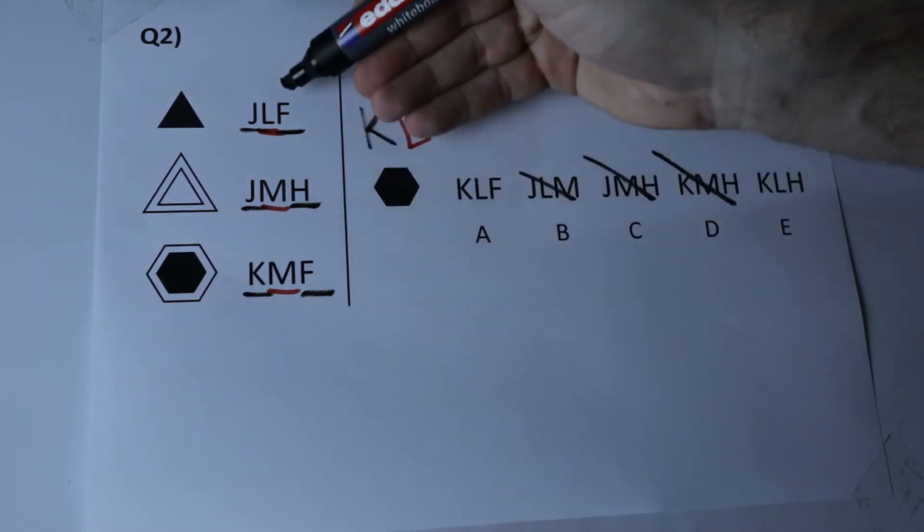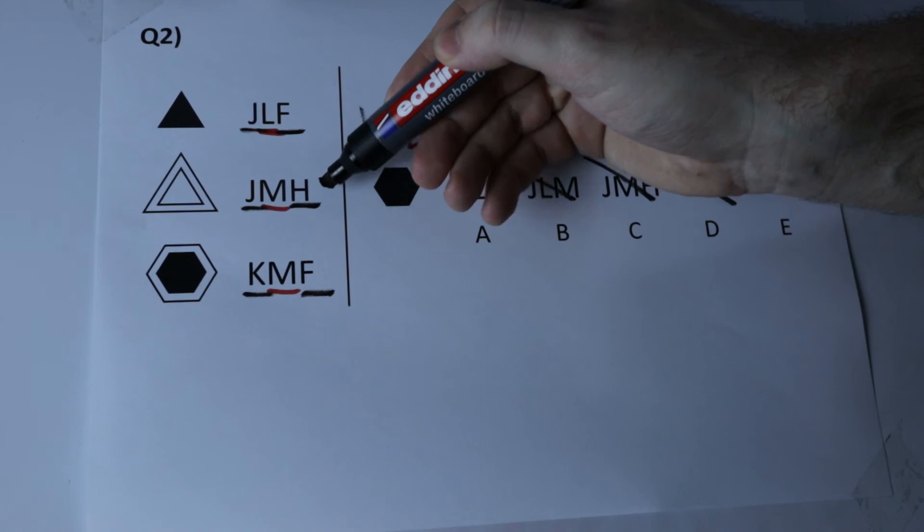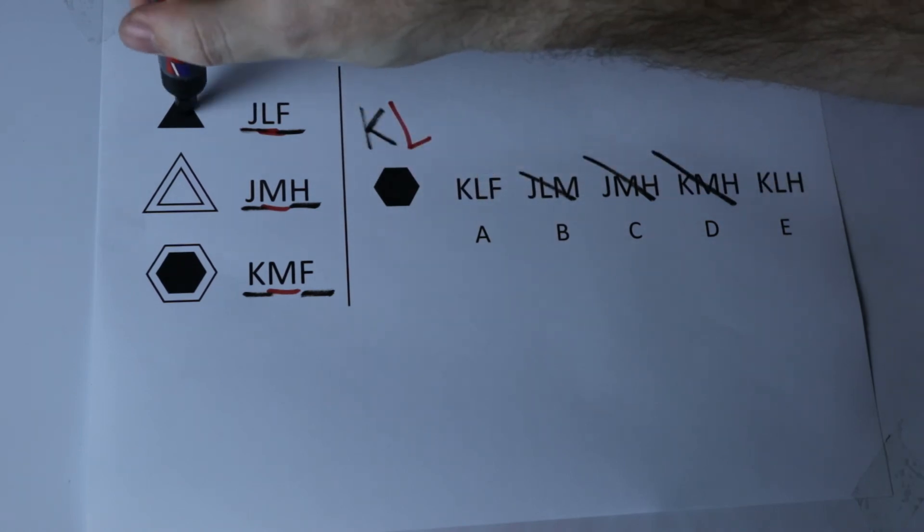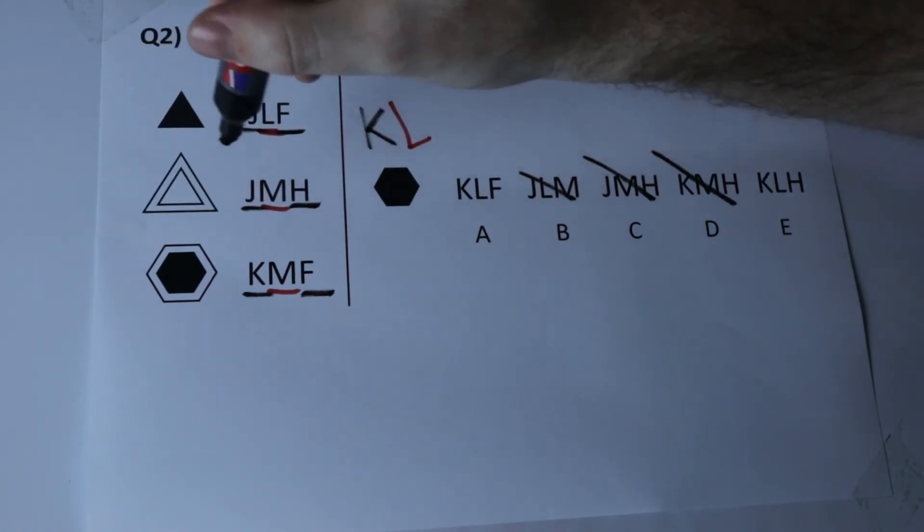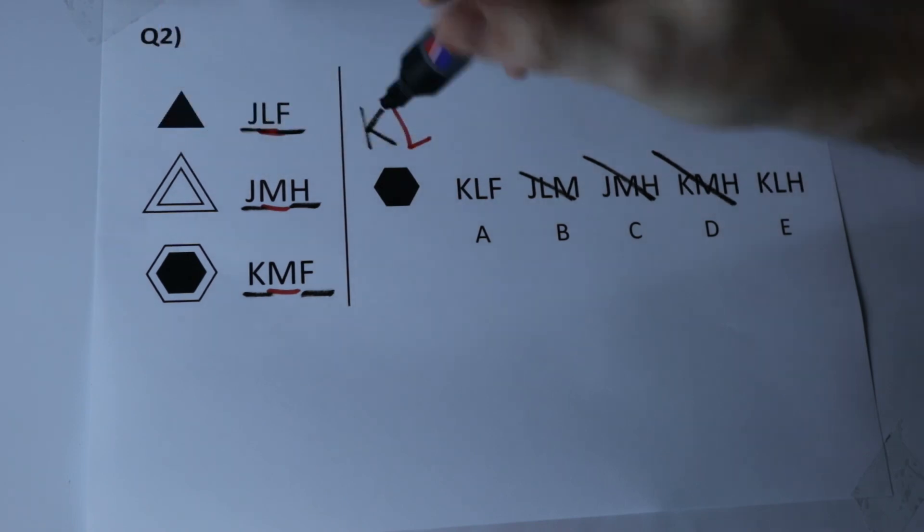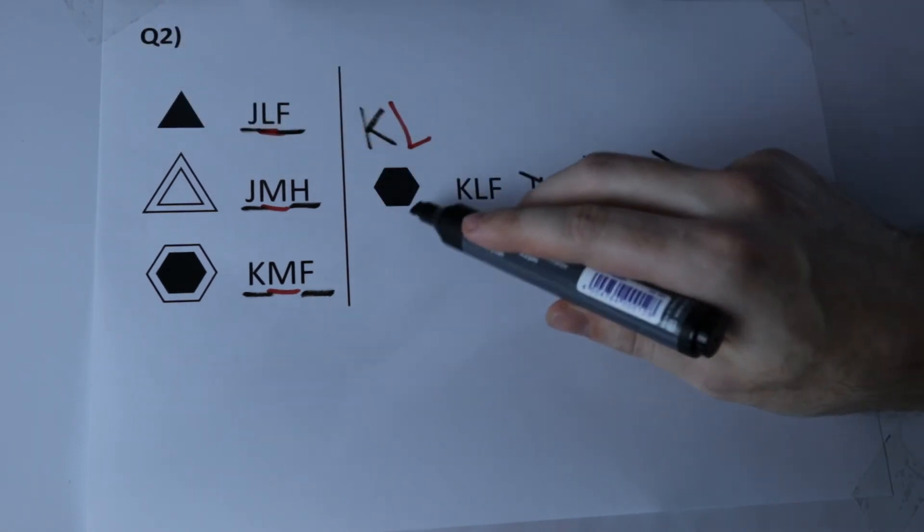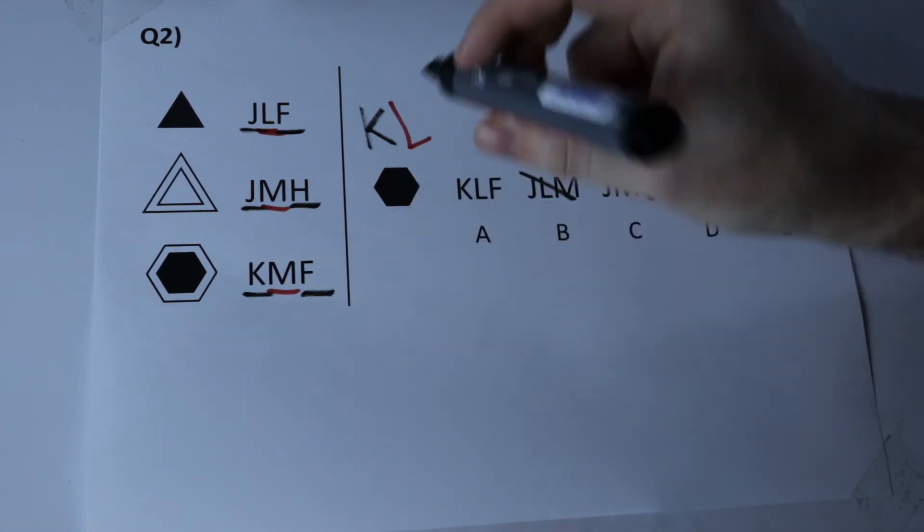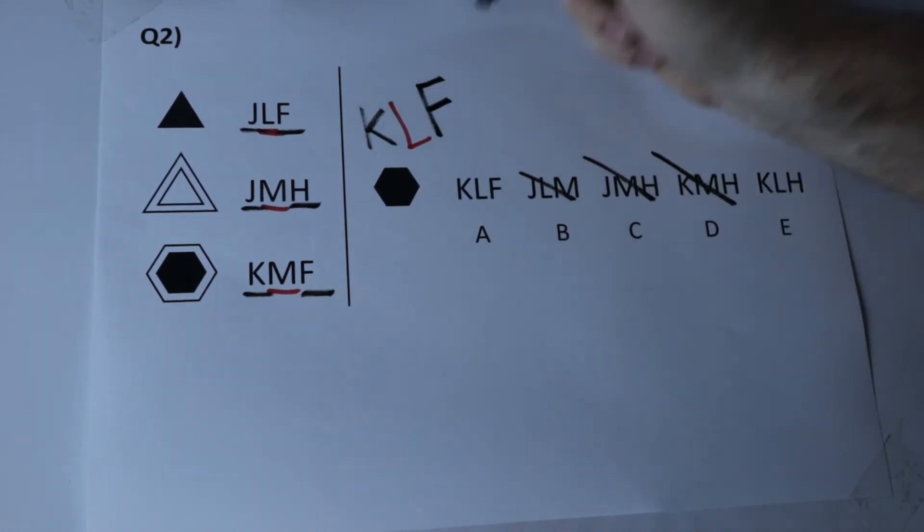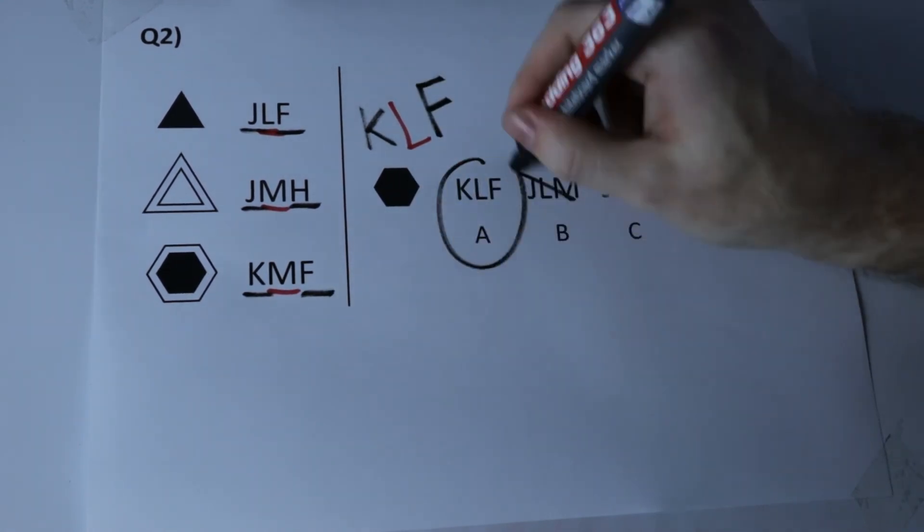What do these F shapes have in common that's different to the H shape? We can see that F means that the centre shape is shaded in black, whereas H means the shape isn't shaded at all. This shape here, our hexagon, is shaded, therefore I match it up with the F code and I write KLF and I circle my answer.